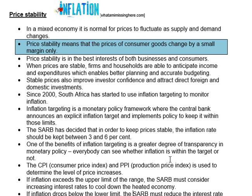The third goal of the government is price stability. In any market economy, it is normal for prices to fluctuate — any time demand and supply changes, the equilibrium price is going to change. By price stability, we don't mean that prices must stay constant all the time. Price stability means that the prices of consumer goods change by a small margin only. It is absolutely normal for prices to increase, but those price increases must be reasonable — a small percentage increase in prices is acceptable.